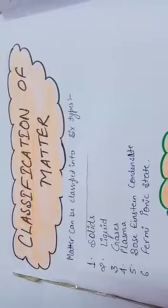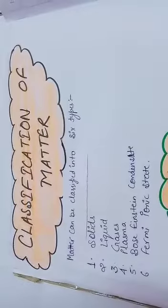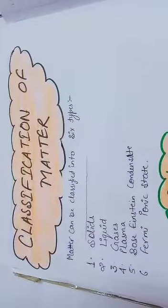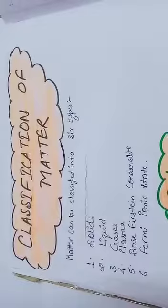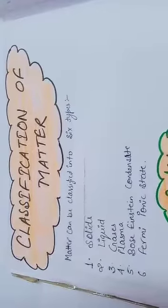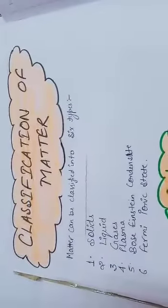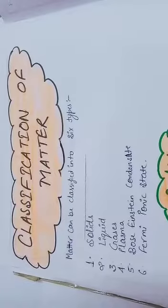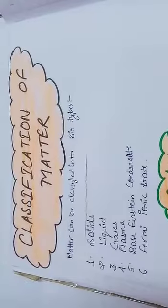Matter can be classified into six types: one is solids, second is liquids, third is gases, fourth is plasma, fifth is Bose-Einstein condensate, and sixth one is Fermionic state. But in your syllabus we have to study mainly three types of states of matter: solid, liquid, and gas.